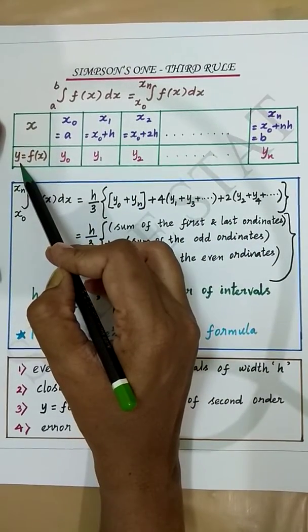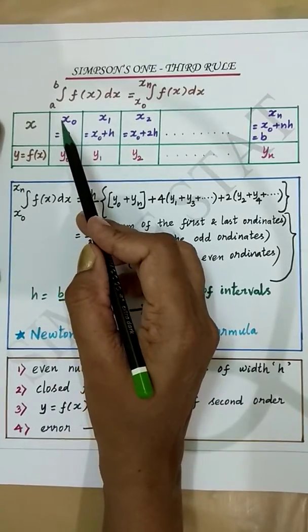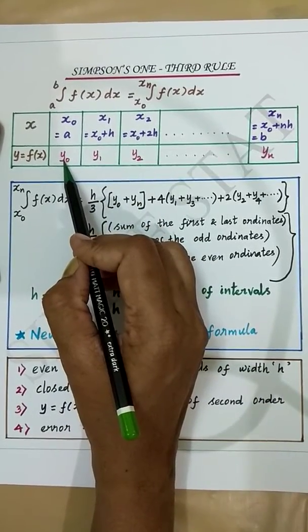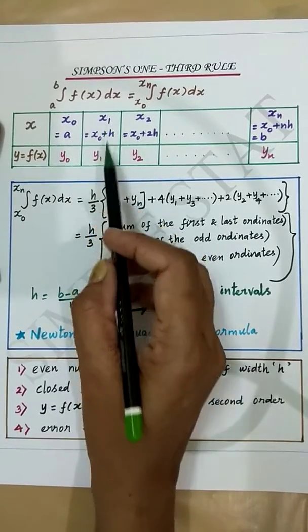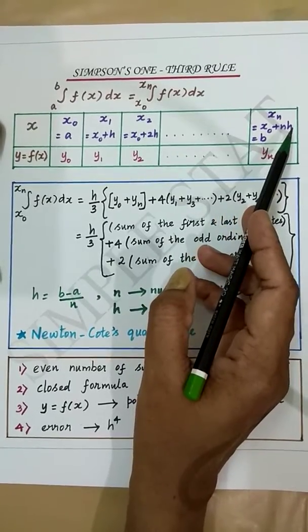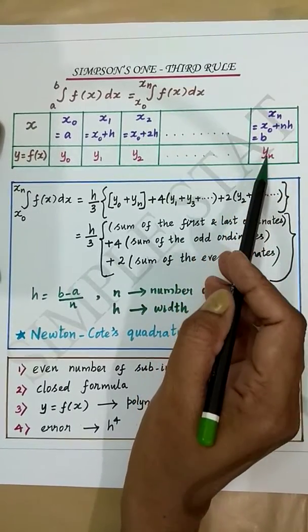Here x, y equal to f(x). So when x takes the value x₀, its corresponding y value is y₀. When x takes the value x₁, its corresponding y value is y₁, and so on. It goes up to xₙ and yₙ.